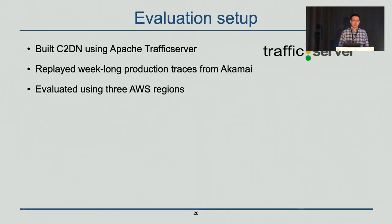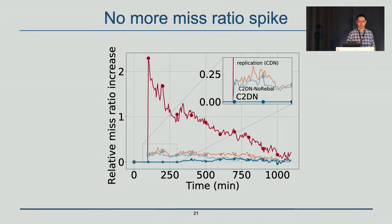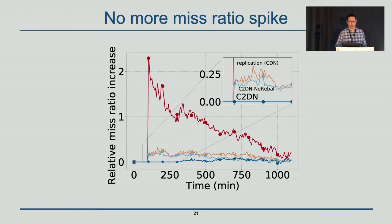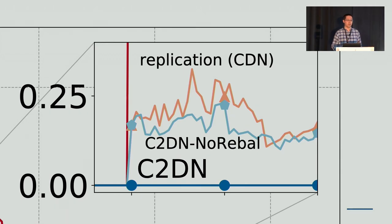Now let's talk about evaluation. We built C2DN using Apache Traffic Server, which is an open-source production CDN software used by many companies. We replayed week-long production traces and evaluated using three AWS regions, placing user, CDN cluster, and origin in three different regions. Looking at miss ratio spike when unavailability happens: the top curve shows no fault tolerance with a huge spike. The bottom curves show the fault-tolerant approaches. If we zoom in, the top is replication (CDN), the second is naive erasure coding (C2DN without load balance), and the bottom is C2DN. The curve of C2DN almost overlaps with the x-axis, meaning C2DN has virtually no miss ratio spike when unavailability happens.